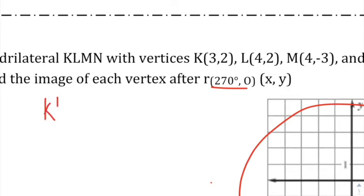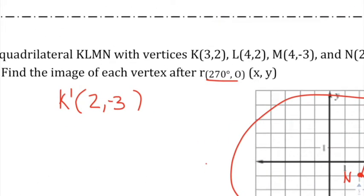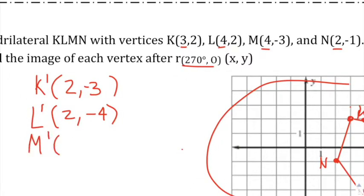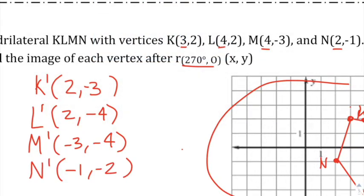Using prime notation: K is (3, 2), switch the order to get (2, 3), then change the original X sign — so K prime is (2, -3). L prime: switch order to (2, _), change original X sign — L prime is (2, -4). M prime: switch order to (-3, _), change original X sign — M prime is (-3, -4).